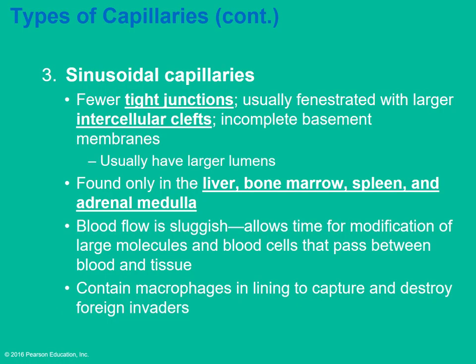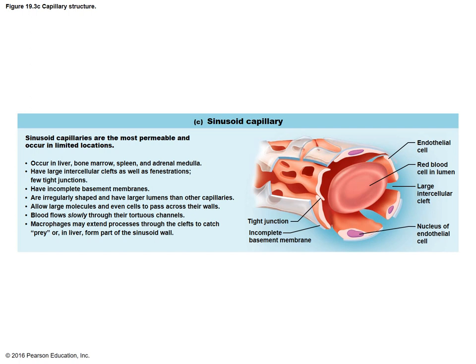Sinusoidal capillaries are found only in the liver, bone marrow, spleen, and adrenal medulla. They allow passage of larger molecules between the blood and tissue. Blood flow is a little slower and more sluggish in these areas, allowing time for larger molecules to pass. They usually have an increased number of macrophages in the lining as protection to destroy foreign substances. Notice the fenestrations are much larger in sinusoidal capillaries.